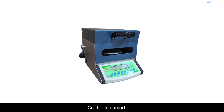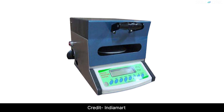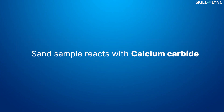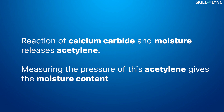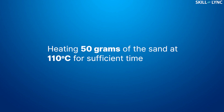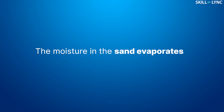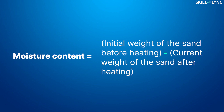To determine the moisture content, a device called a moisture teller is used. In this equipment, the sand sample is allowed to react with calcium carbide, which acts as an absorbent. The moisture content is determined by measuring the pressure of acetylene gas released when the calcium carbide reacts with moisture. Another method is by heating 50 grams of sand at 110 degrees Celsius for sufficient time. As the moisture evaporates, the sand is weighed, and by subtracting the new weight from the initial weight, the moisture content is determined.